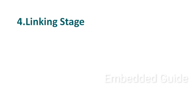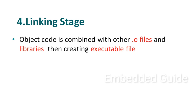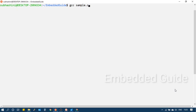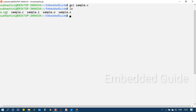The last compilation stage is the linking stage. In this stage, the object code .o file is combined with other .o files and libraries to generate the executable file. Libraries are collections of .o files containing predefined function definitions — like printf and scanf. On Linux, the default executable file is named a.out, but a custom name can also be specified.